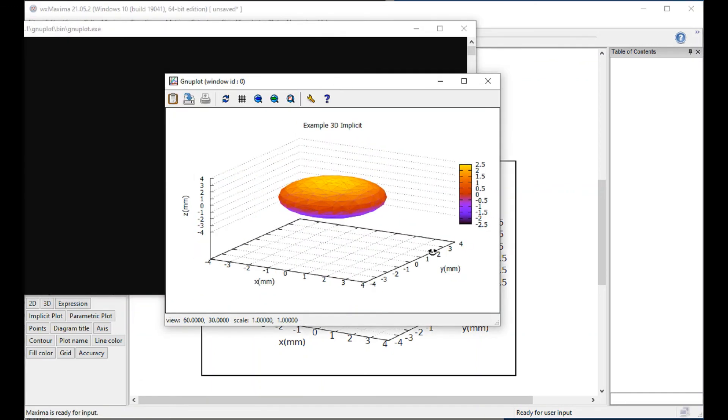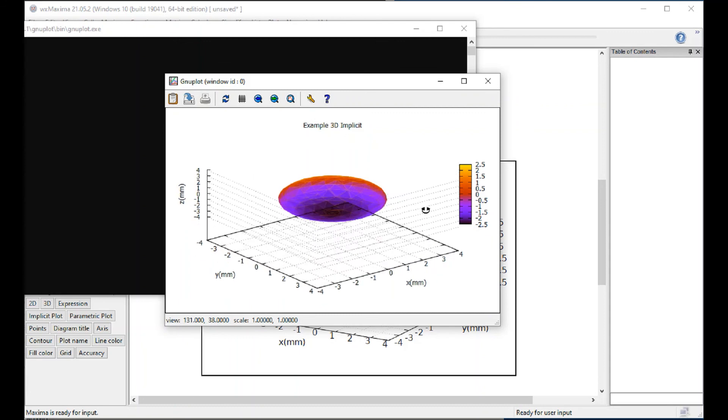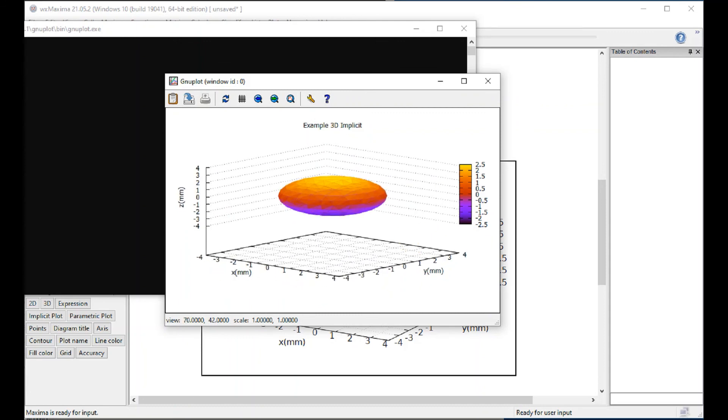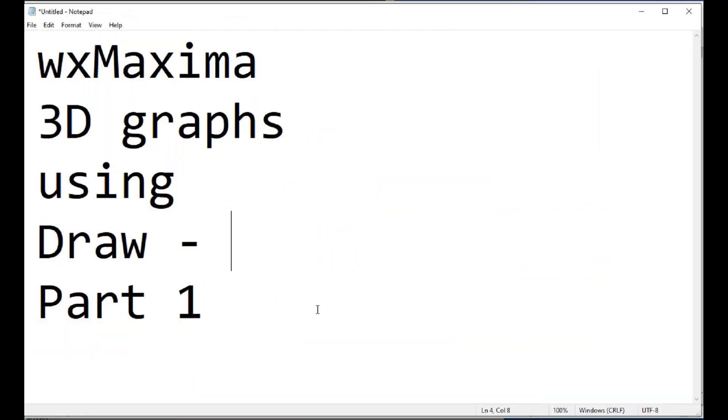But if I do a right click and say prop out interactively, bring it in here, you can see it from different points of view. With that we're going to stop this first part of the three dimensional graphs and continue in the next video.